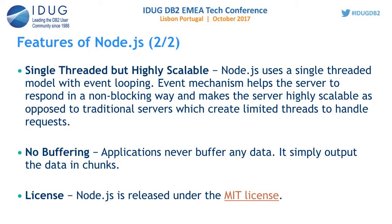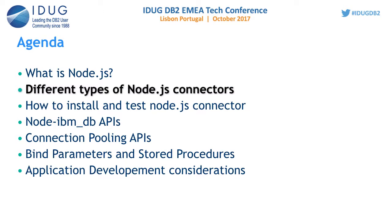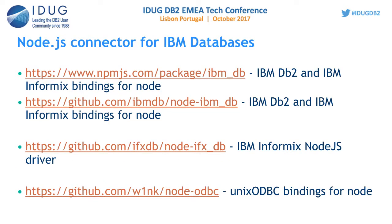Node.js is open source and comes under the MIT license. There are mainly three important Node.js connectors. The first link shows the node IBM DB connector hosted on npm.js, with the package name ibm_db. When you run npm install ibm_db, it gets downloaded from the npm site and installed into your system.